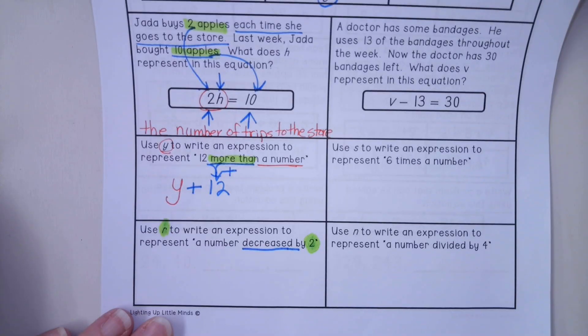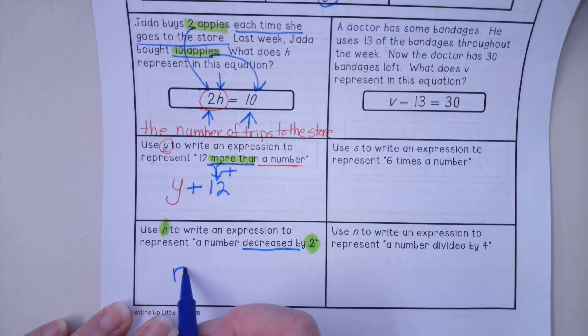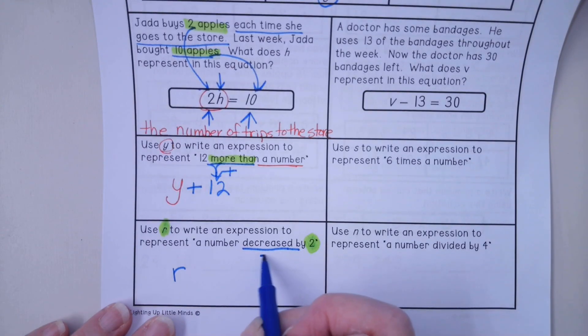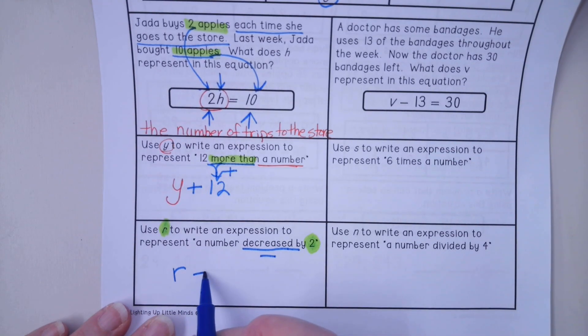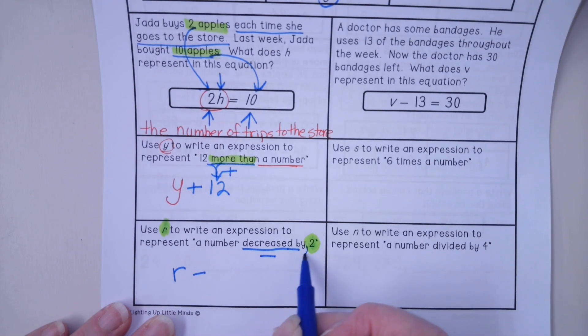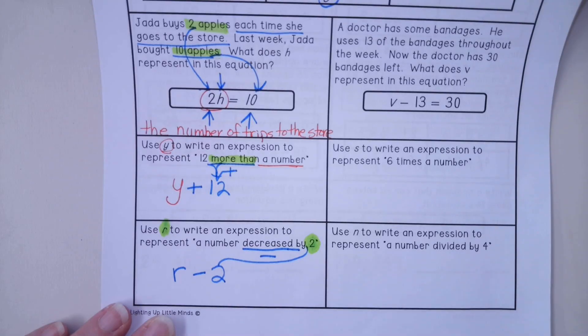Think about it for a minute. If we are decreasing by 2, we're going to start with our variable R. And to decrease, we could either subtract or divide. In this case, it's not telling me we have equal parts. So for me, that means it is going to subtract. And then we have to have our number 2.